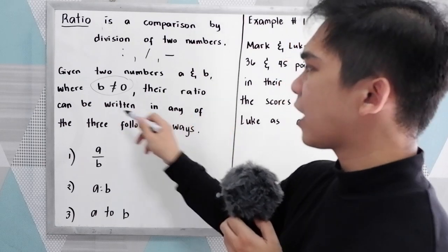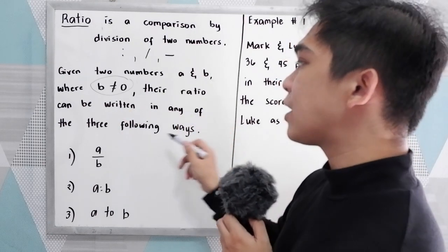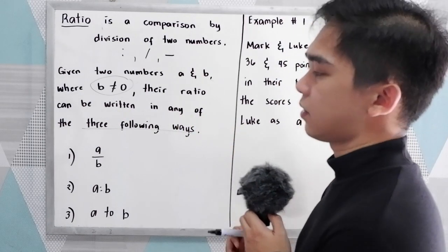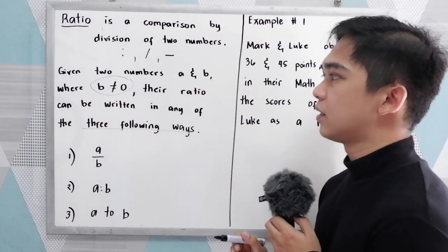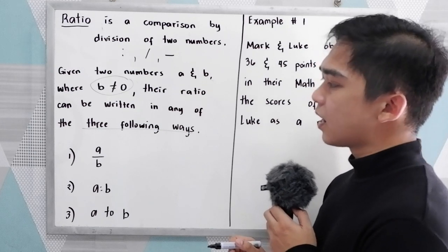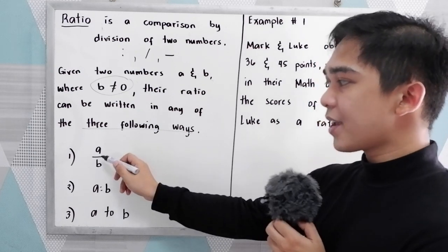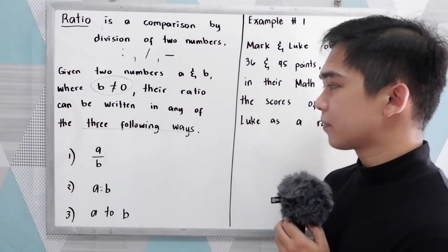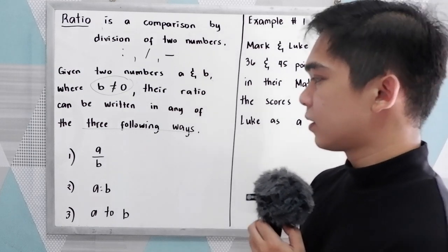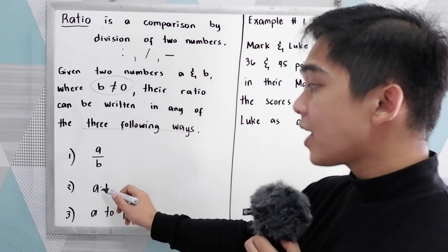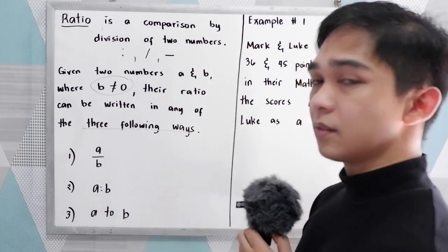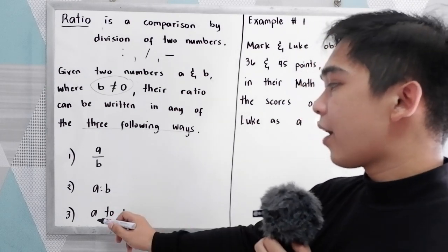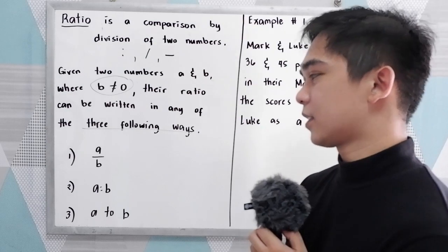Their ratio can be written in any of the three following ways. Our ratio can be written as a over b, a is to b, or a to b.